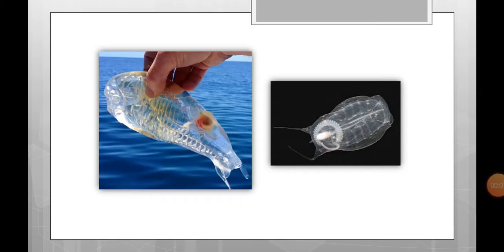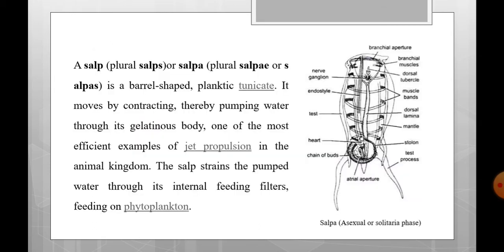You have seen how salpa is found in the sea in a solitary form and gregaria form. The transparent body can form chains up to 15 feet long in the sea. Salpa is barrel-shaped and feeds on plankton. It moves by contracting and thereby pumping water through its gelatinous body.